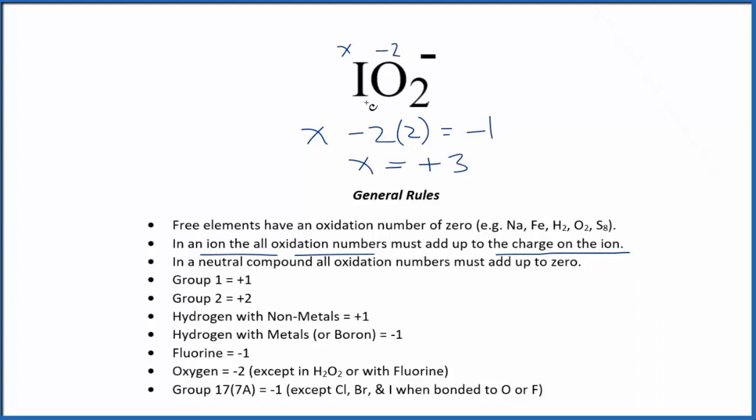So the oxidation state on the iodine here in IO₂⁻, that's going to be plus 3. If you were to take plus 3 and add it to 2 times negative 2, so plus 3 and negative 4, that would give you the 1 minus. So that's how you find the oxidation number for each element here in IO₂⁻ the iodite ion.